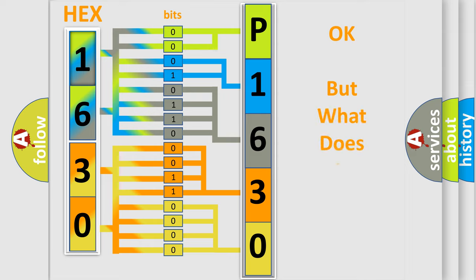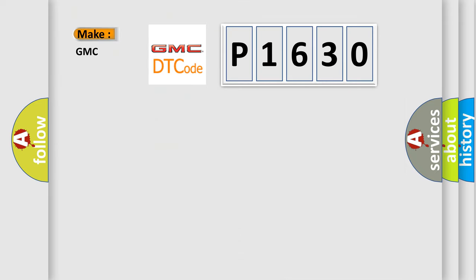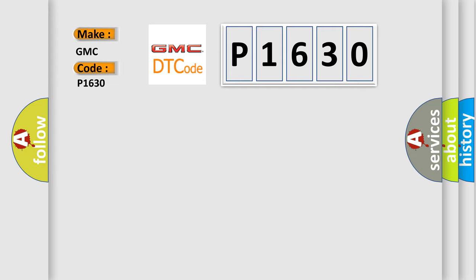The number itself does not make sense to us if we cannot assign information about it to what it actually expresses. So, what does the Diagnostic Trouble Code P1630 interpret specifically for GMC car manufacturers? The basic definition is Right front wheel speed sensor general failure information mechanical failures. And now this is a short description of this DTC code.